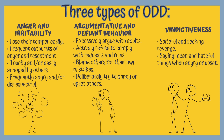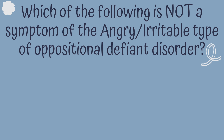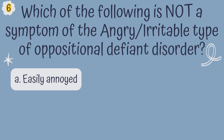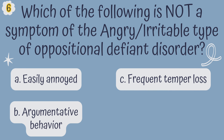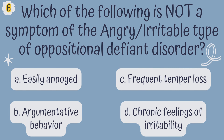These types reflect different patterns of behavior that children with oppositional defiant disorder may exhibit. Question 6. Which of the following is not a symptom of the angry, irritable type of oppositional defiant disorder? A. Easily annoyed, B. Argumentative behavior, C. Frequent temper loss, or D. Chronic feelings of irritability.